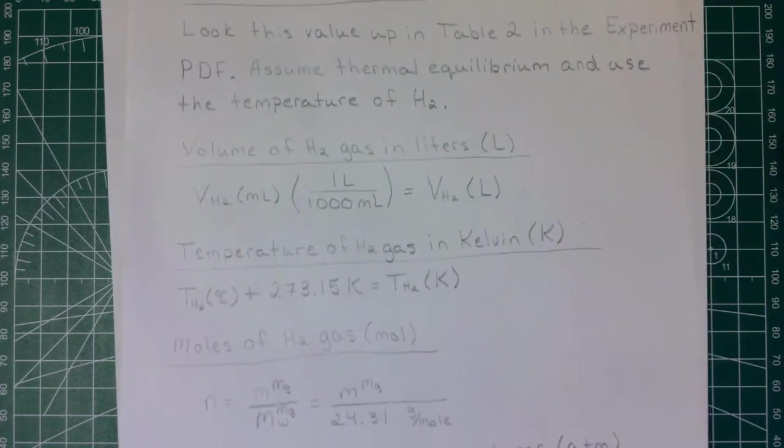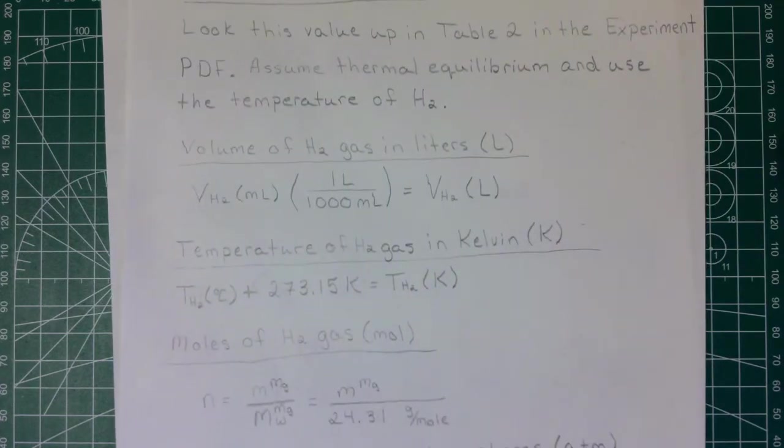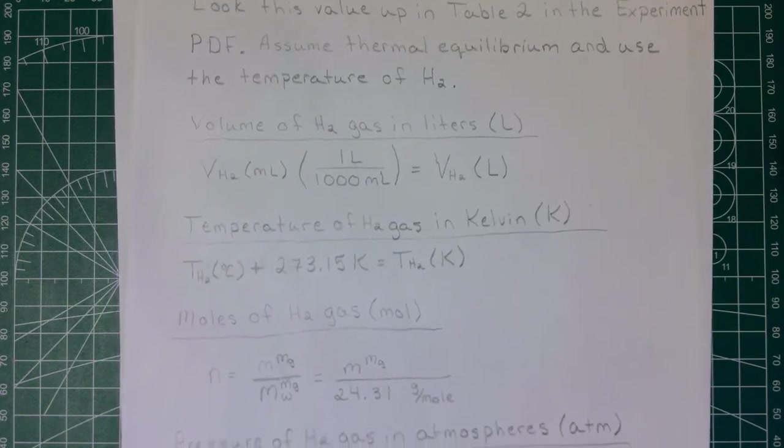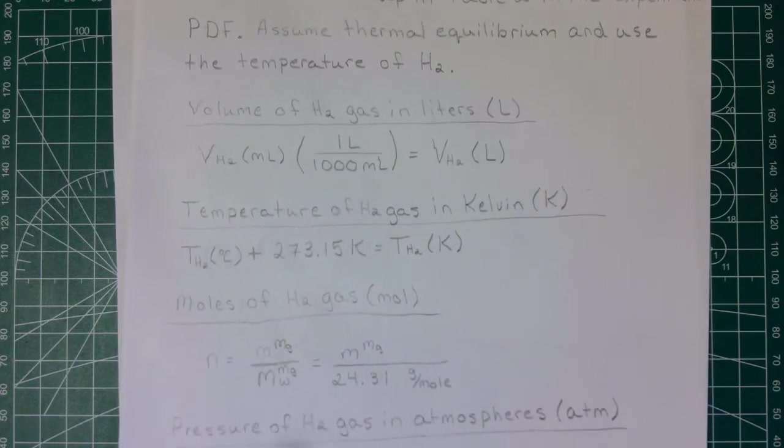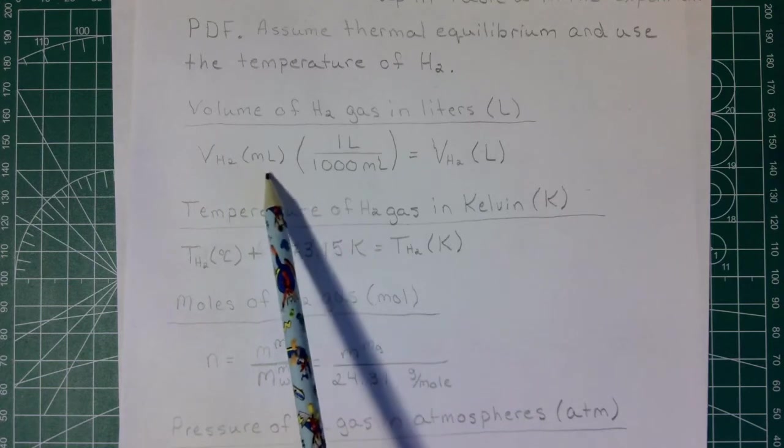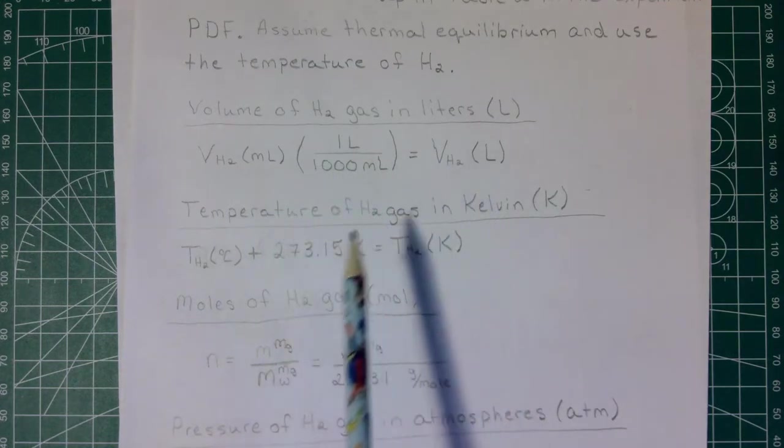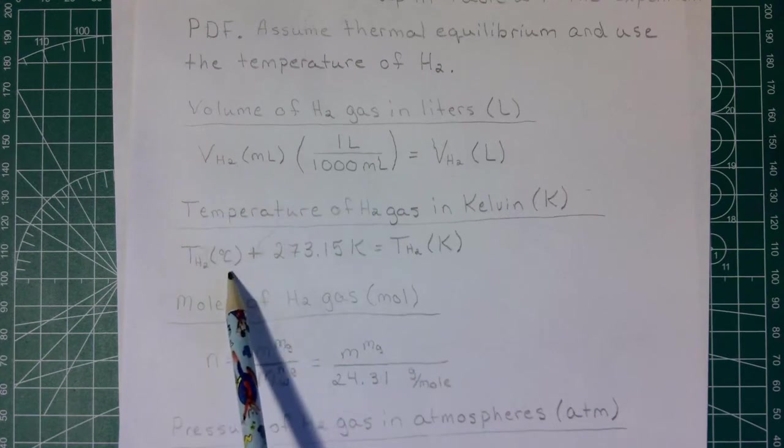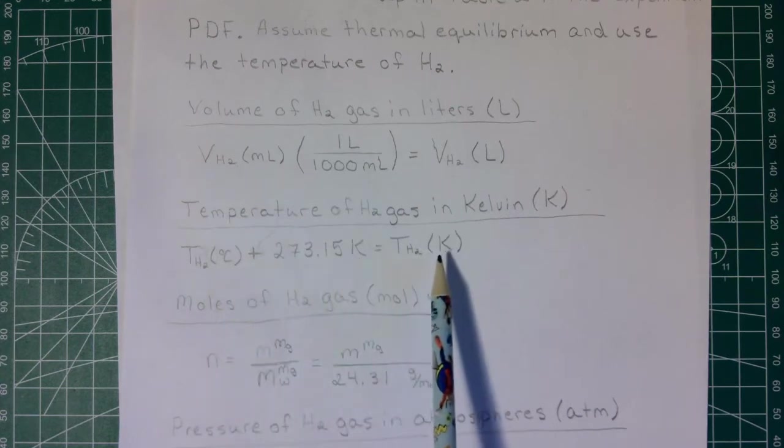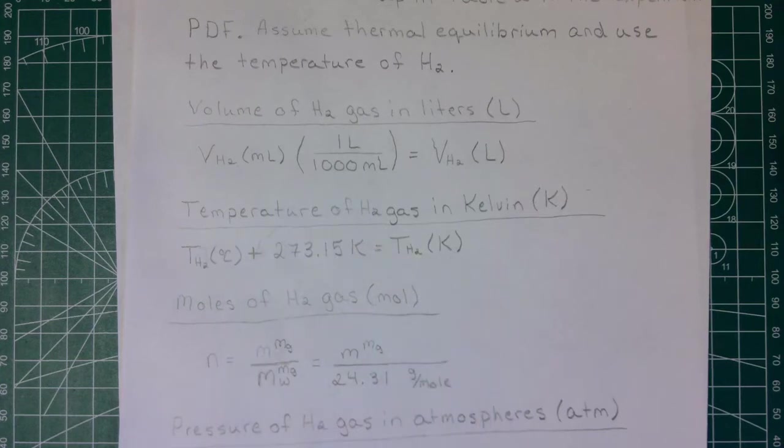The next things are pretty much just a series of conversions. We're going to convert the volume that's given to us for the H2 from milliliters over to liters. We're going to convert the temperature of the H2 that's given to us from degrees Celsius over to Kelvin.